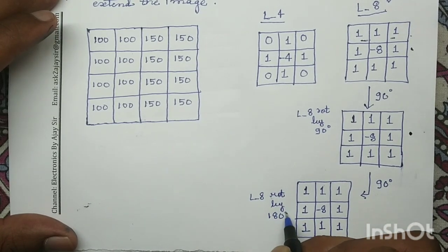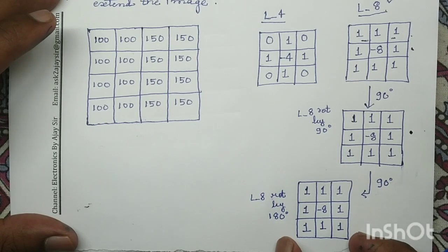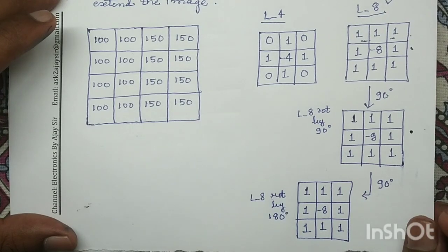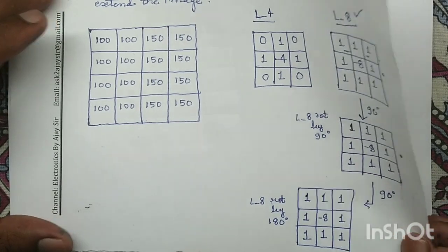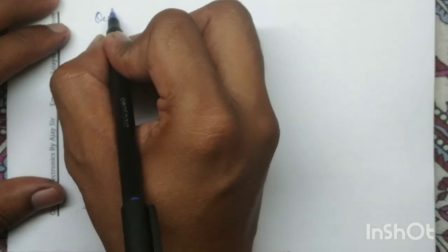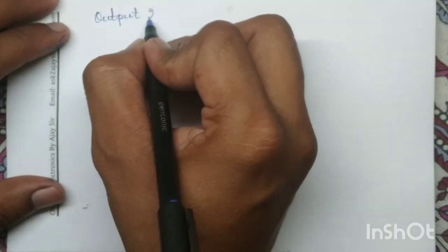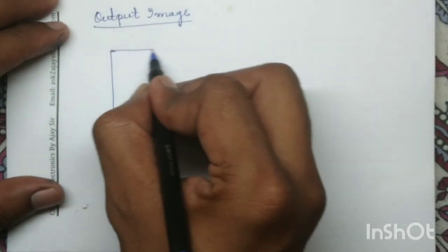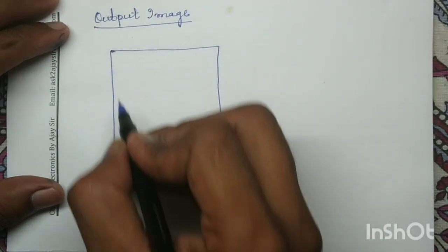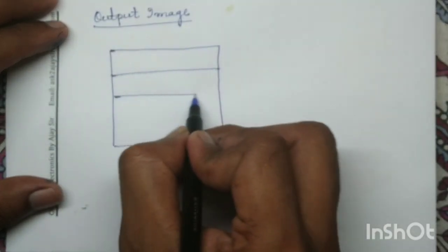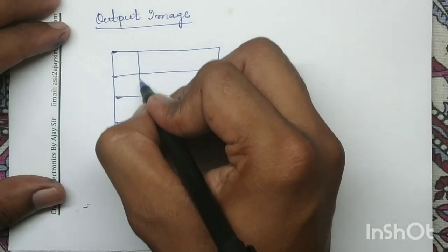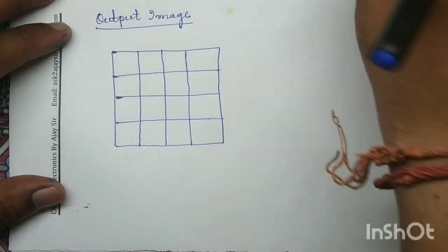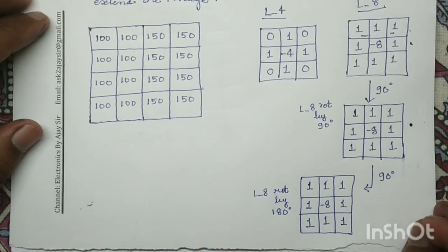Now this rotated mask we have to apply on the input image. The dimension of this input image is 4x4, so the dimension of the output image is also 4x4. I will make an output image having the same dimension, that is 4x4.